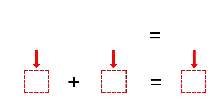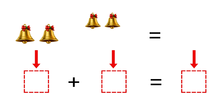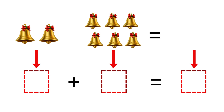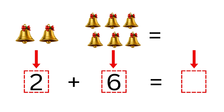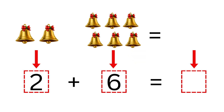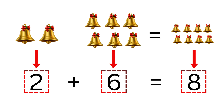Now, take a look. Let's add some elements. Here goes the first bell, and now the second bell on the same side. On the other side, I will add first bell, second bell, third bell, fourth bell, fifth bell. So, on one side we have two bells, and on the other side we have six bells. How many bells are there in total? Let's count: one, two, three, four, five, six, seven, eight. In total, we have eight bells. Which means two plus six is equal to eight.